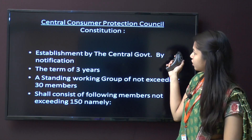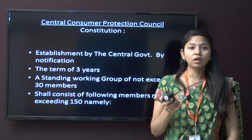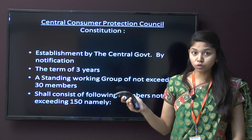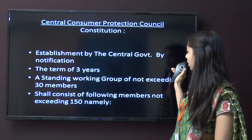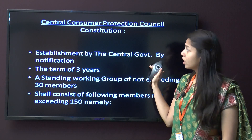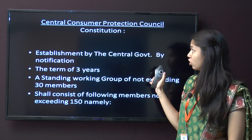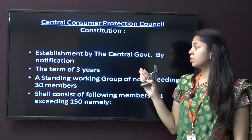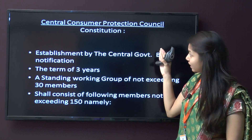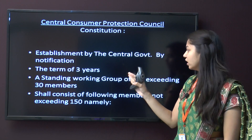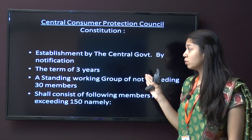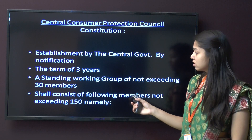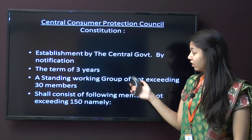The Central Consumer Protection Council is established by the central government by notification. The term of the Central Consumer Protection Council is 3 years. It has a standing working group not exceeding 30 members, and the full council shall consist of not more than 150 members.